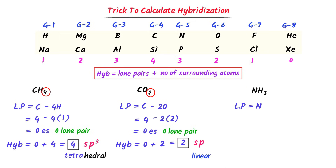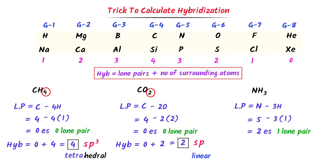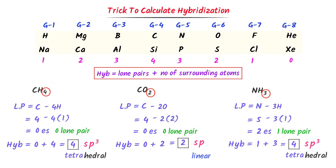In case of NH₃, the central atom is nitrogen with 3 hydrogen atoms. Group number of nitrogen (5) minus 3×1 = 2 electrons, so there is 1 lone pair on the central atom. Hybridization = 1 + 3 = 4 hybrid orbitals, meaning sp³ (1s and 3p). This 4 stands for tetrahedral, so the geometry of this molecule is tetrahedral. Using this trick, we can easily calculate the hybridization of the central atom.